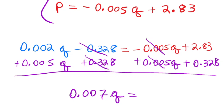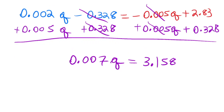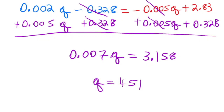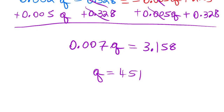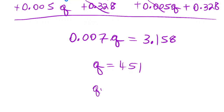I get 3.158 on the right side. Then it's just a matter of dividing both sides by 0.007, which gives me approximately 451 units. Q stands for quantity, so 451 is the equilibrium quantity.